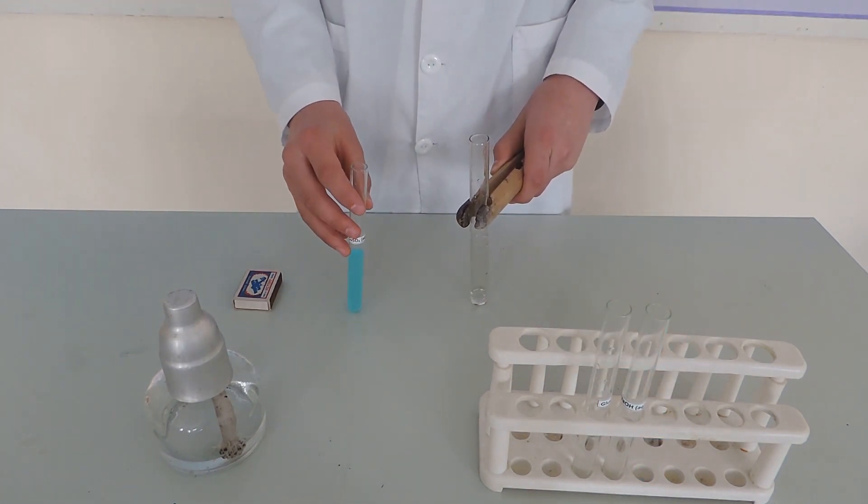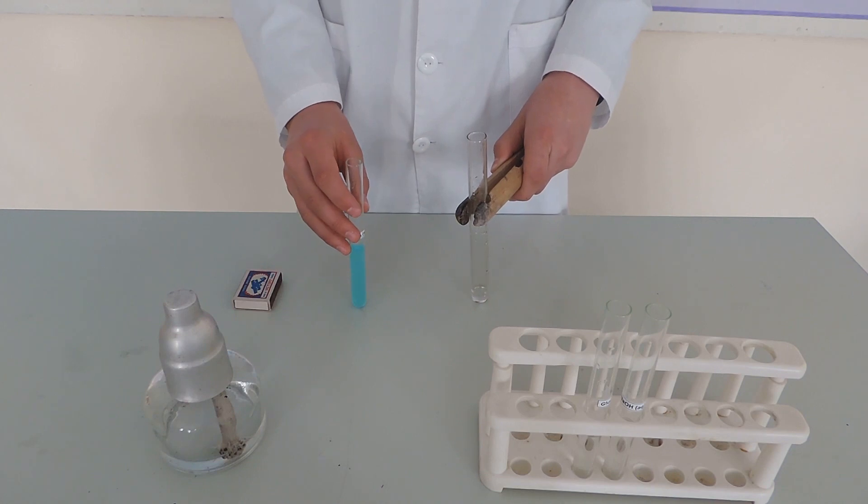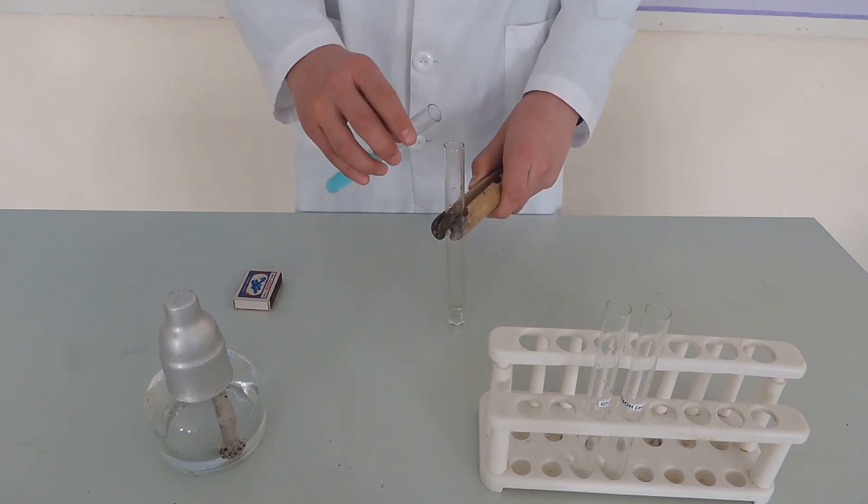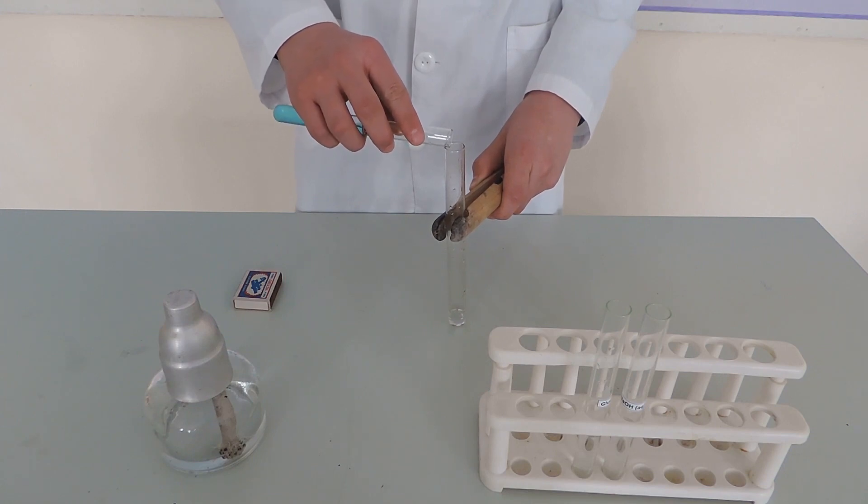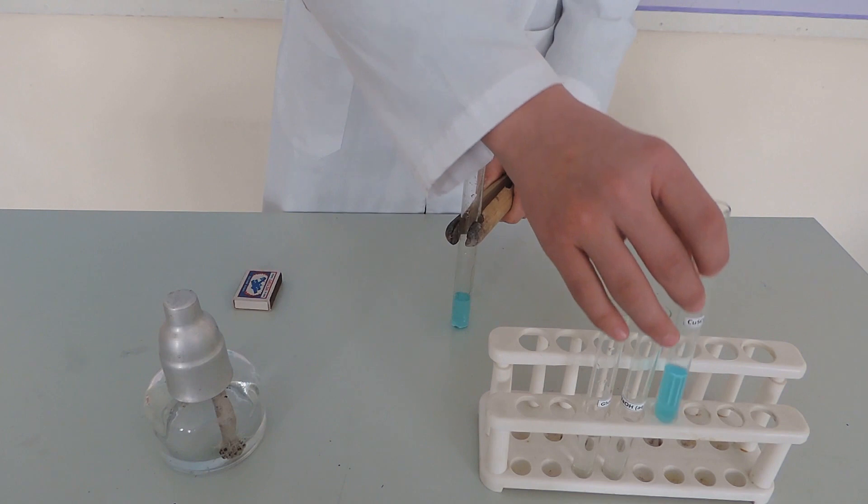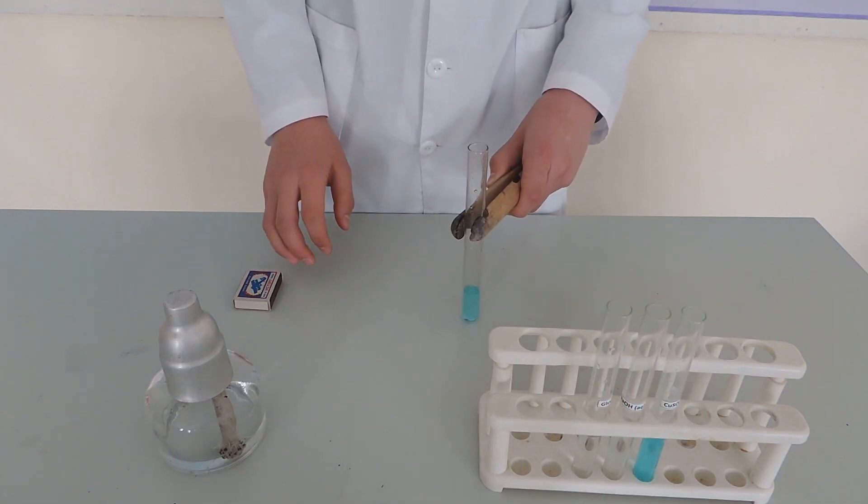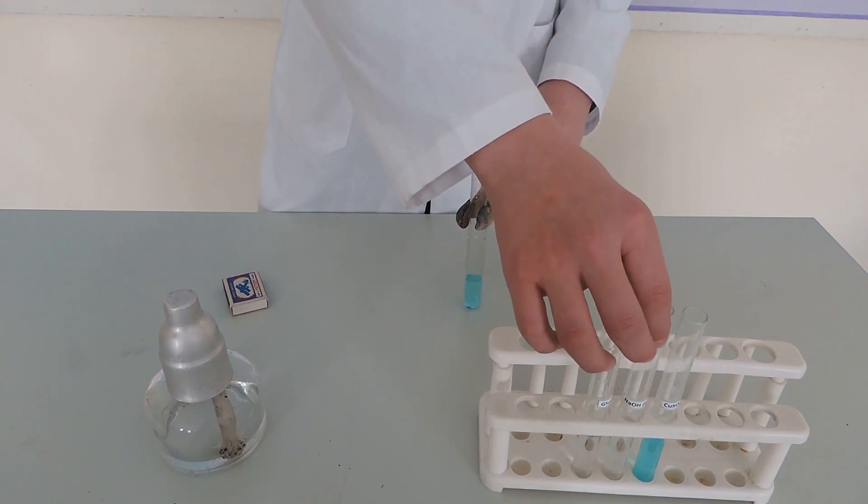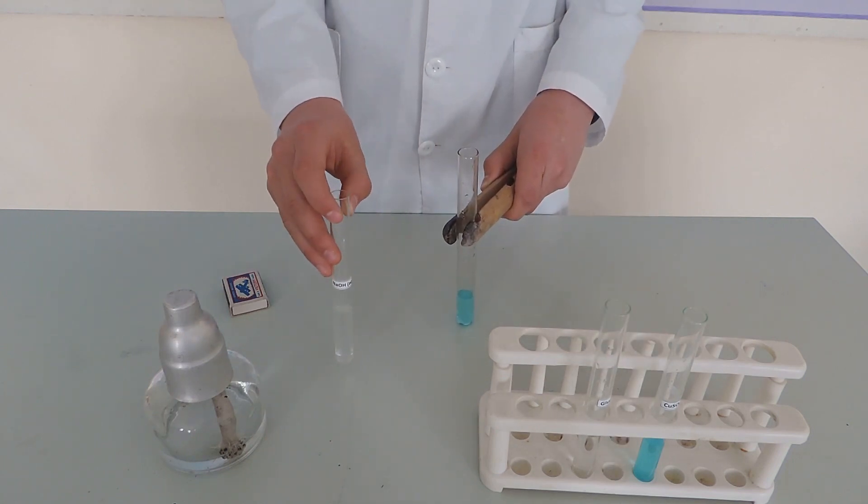We pour some copper sulfate into our test tube containing glucose, and then we add sodium hydroxide solution.